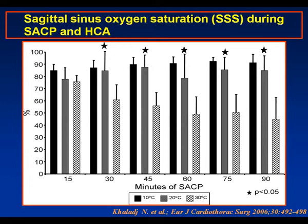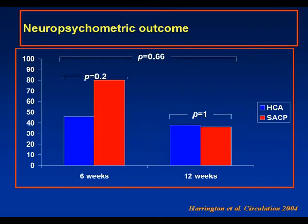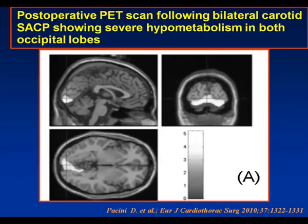So there is an ongoing debate regarding SACP, the corporeal arrest temperature, and the temperature of the perfusate, which is yet to be resolved. Experimental data tends to favor a lower temperature outcome. But our results for arch surgery are not perfect — there is still a similar neuropsychometric deficit in patients 12 weeks after surgery, which does not appear to be abrogated by the use of SACP. Data from the Bologna group using PET scanning and MRI in patients undergoing SACP has shown quite a disturbing incidence of occipital lobe hypoperfusion or hypometabolism following bilateral carotid SACP, perhaps indicating that we are not perfusing the posterior circulation of the brain effectively.